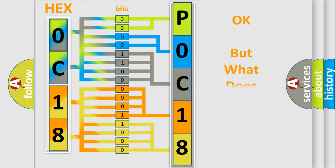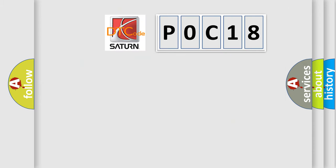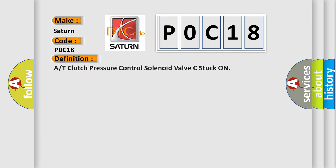We now know in what way the diagnostic tool translates the received information into a more comprehensible format. The number itself does not make sense to us if we cannot assign information about what it actually expresses. So, what does the diagnostic trouble code P0C18 interpret specifically for SAE and car manufacturers?